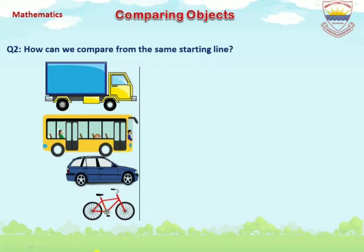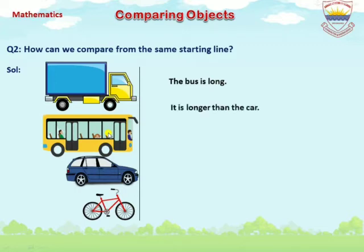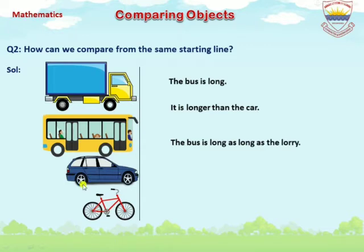Solution: The bus is long. As you see, it is longer than the car. When we compare the bus with the car, the bus is longer than the car. The bus is as long as the lorry. As you see in the picture, the bus is as long as the lorry.